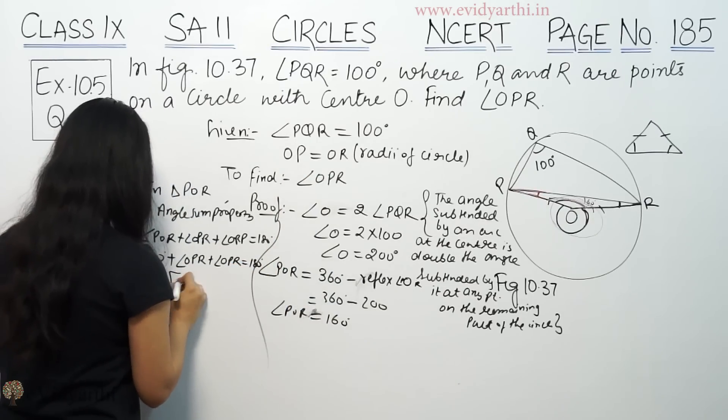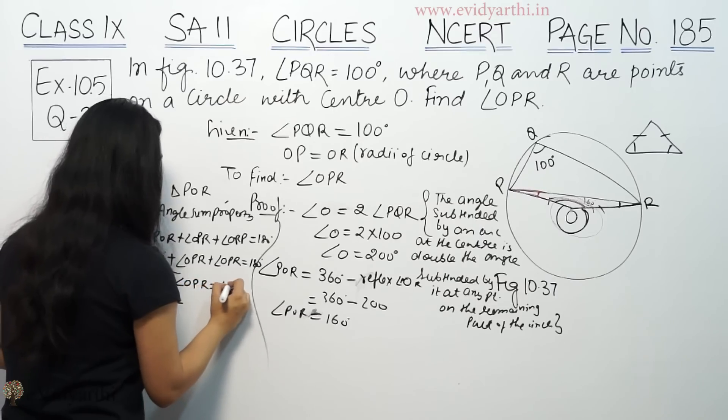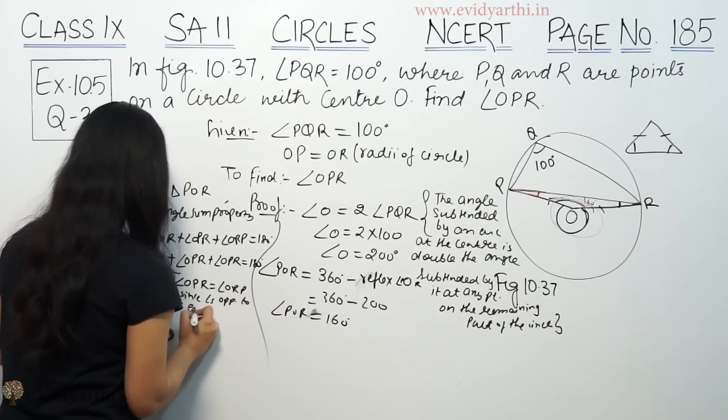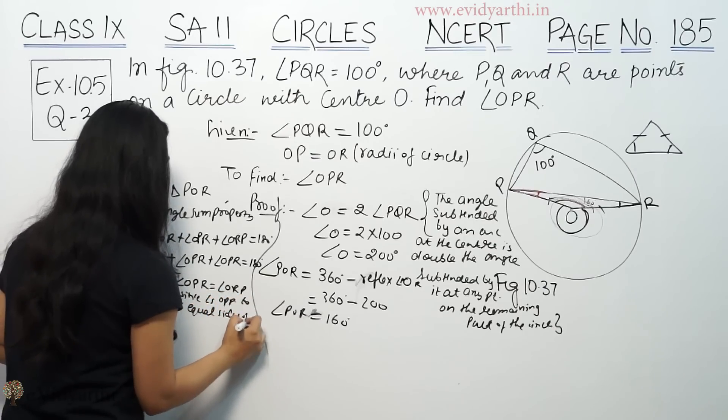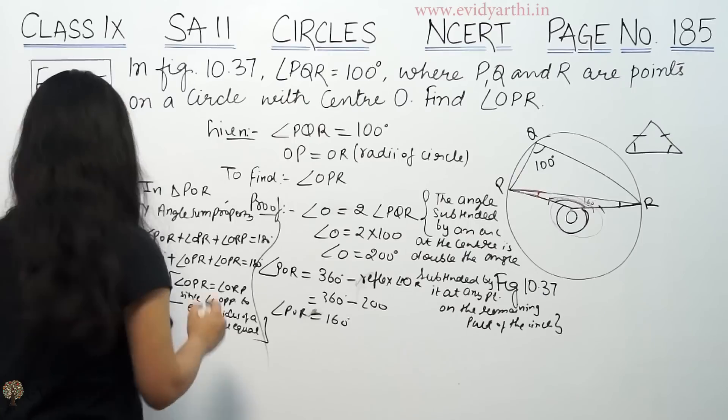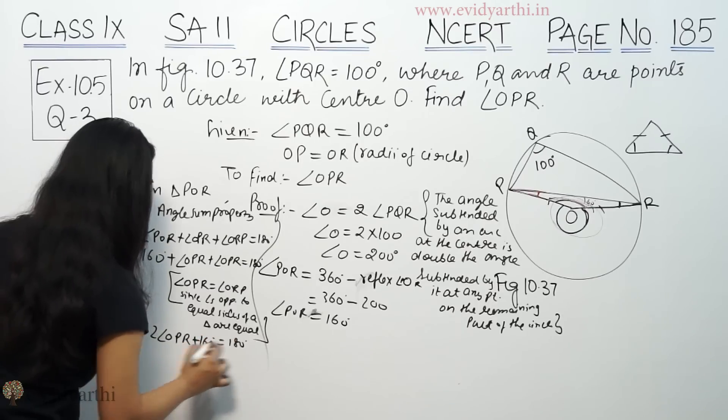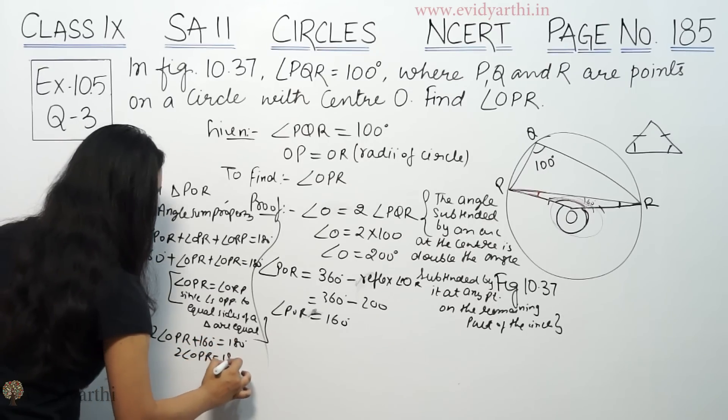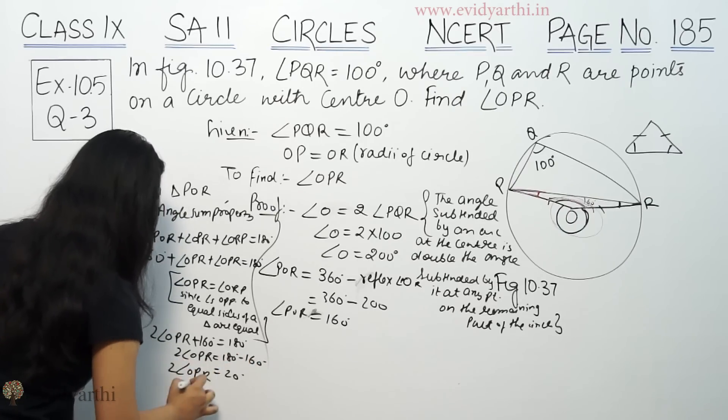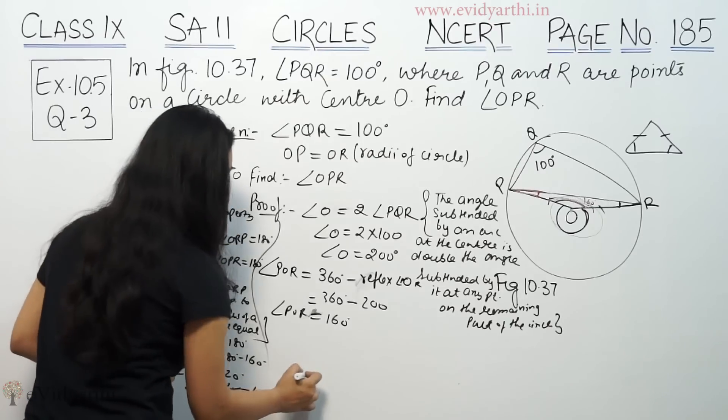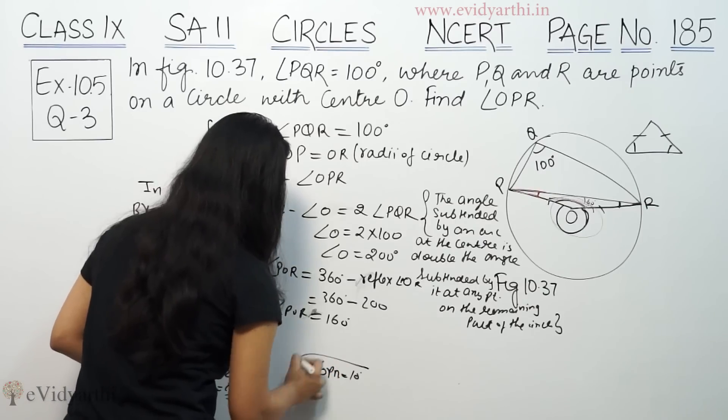So we will write angle OPR is equal to angle ORP since angles opposite to equal sides of a triangle are equal. So we will write 2 times angle OPR plus 160 is equal to 180. So angle OPR is equal to 180 minus 160 equals 20 degrees, which means 10 degrees. Therefore angle OPR is equal to 10 degrees.